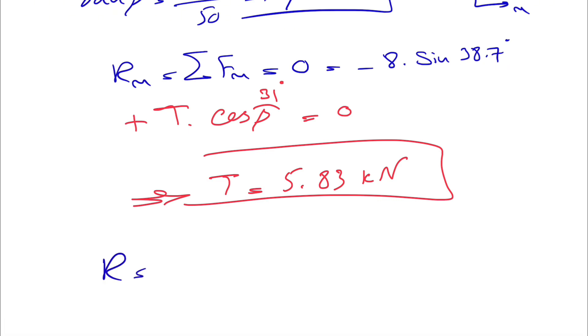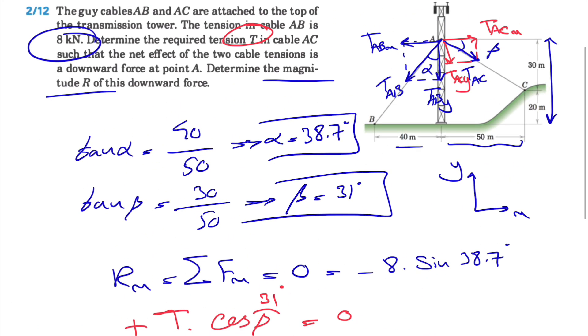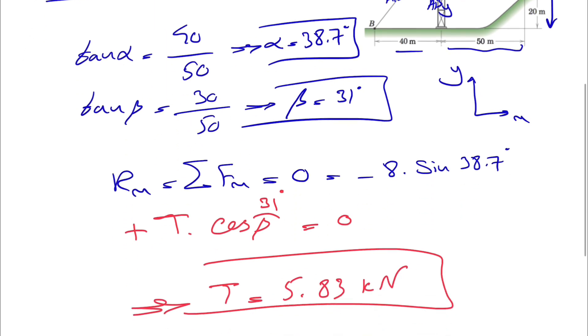It's easy enough now to find R. Our R would be only RY, and we only need to find the sum of all forces in Y direction. Both Y components are negative. For AB, we will have minus 8